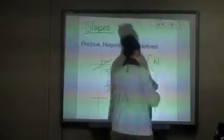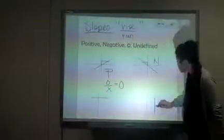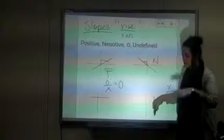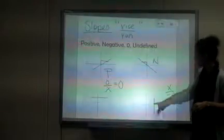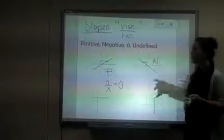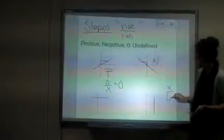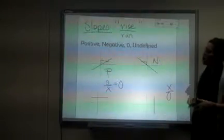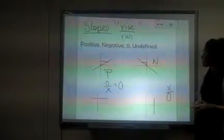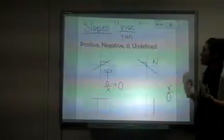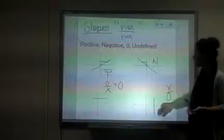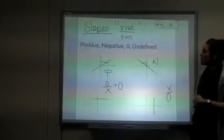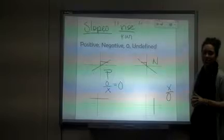When it comes to a vertical line, your rise is a number — it could be one, two, seven, it doesn't matter — but you don't run. And if you were to put any number divided by zero in your calculator, you'd get an error. The reason is because it's an undefined answer — it doesn't exist. So a vertical line has a slope that's undefined.